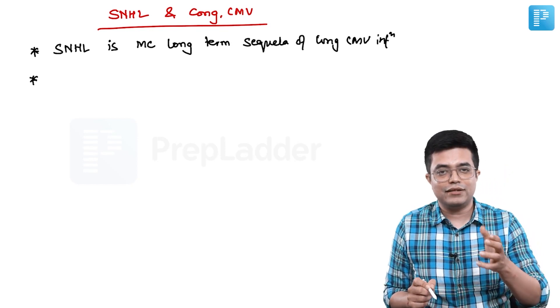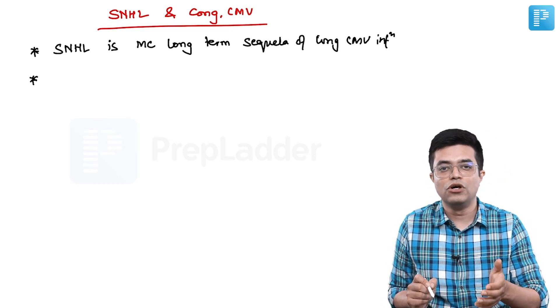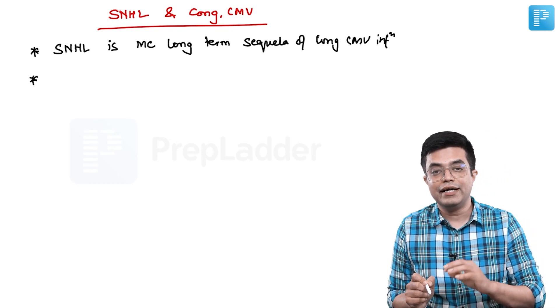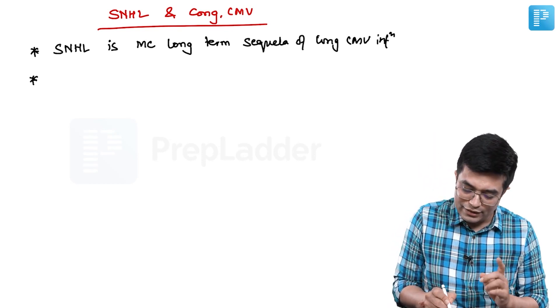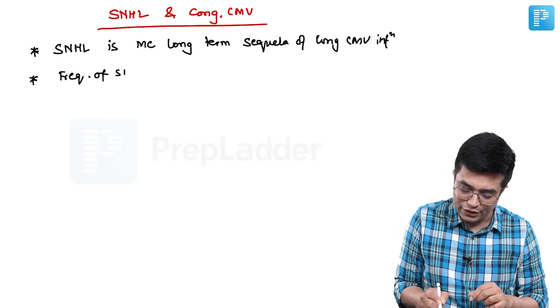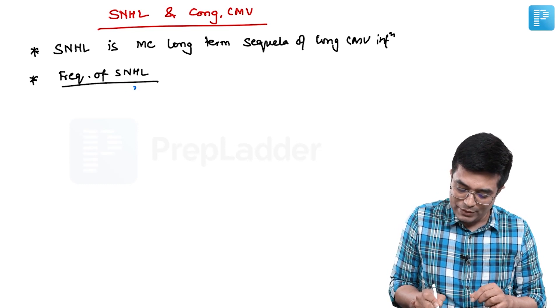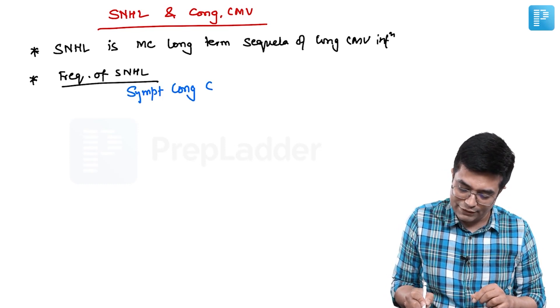Second thing, it is not that the sensory neural hearing loss is going to happen only in symptomatic children. It can even happen in asymptomatic children. So the second thing that you need to remember is frequency of sensory neural hearing loss. If it is symptomatic congenital CMV, the frequency of sensory neural hearing loss is as high as 60 to 65 percent.